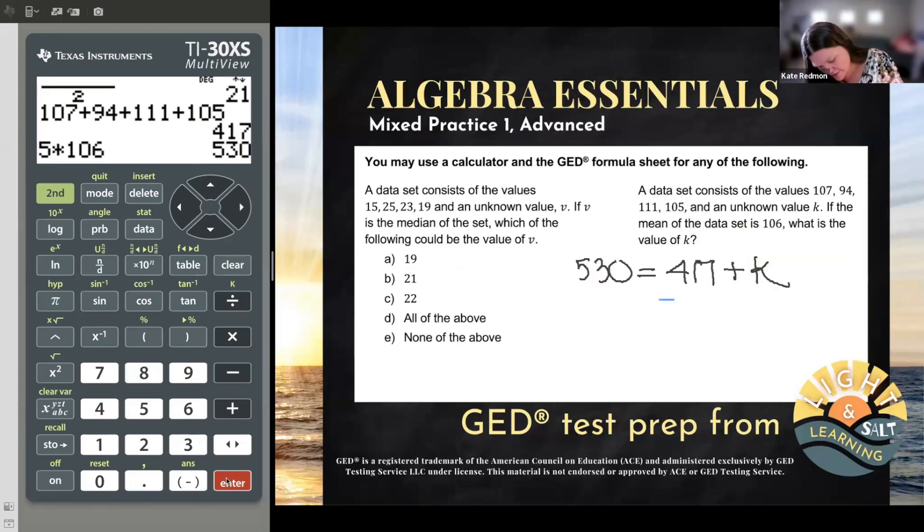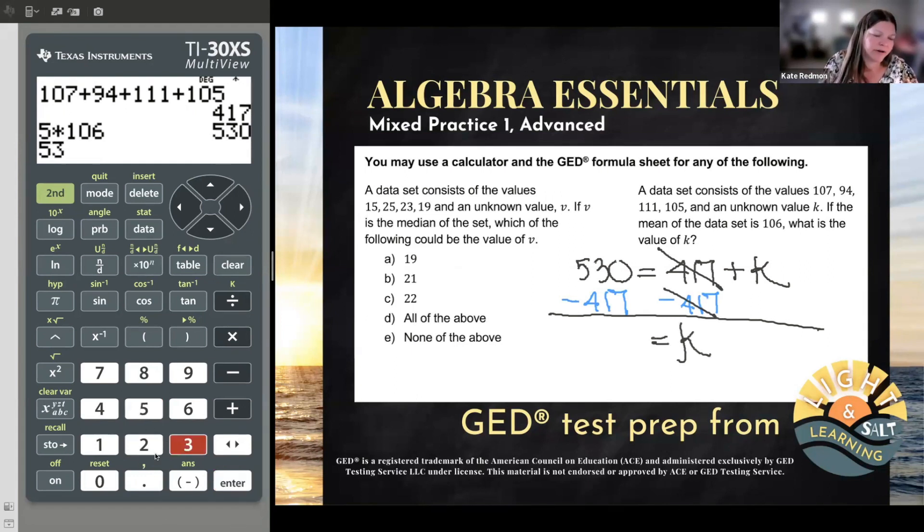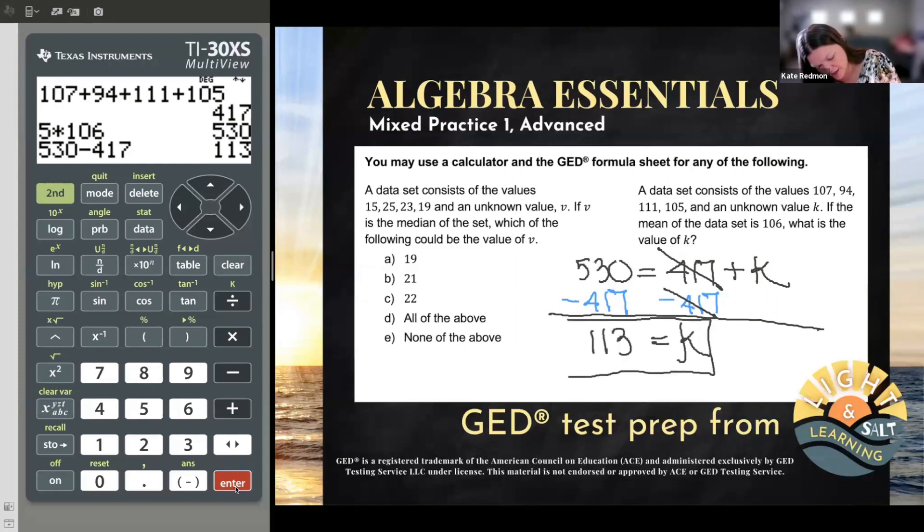And so now I can get rid of the 417. That is a term. So I move it through addition or subtraction. That just means it's adding or subtracting with K. I want it to zero out. So I subtract it away. Do the same thing to the other side. That cancels out. And I just have nothing plus K or K. And I can do this final step in my calculator. I really recommend you do because you're going to be thinking so hard about everything else. It would be so silly to make a dumb error on subtraction. And I see that K, that missing value has to be 113.